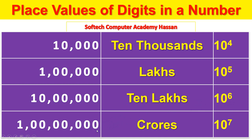Ones, tens, hundreds, thousands, ten thousands, lakhs, ten lakhs, crores — that is 10 to the power of 7.